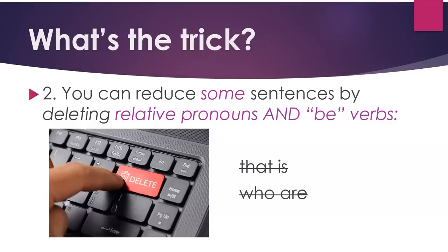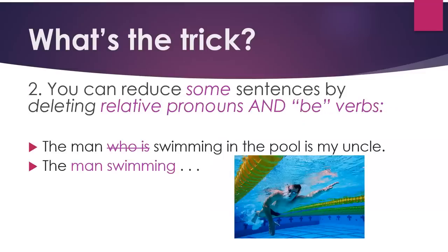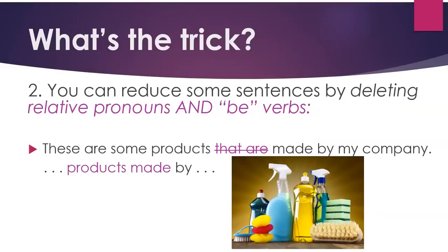You can also reduce some sentences by deleting relative pronouns and be verbs — for example, 'that is' and 'who are.' For example: 'The man who was swimming in the pool is my uncle.' We can delete 'who was.' The new sentence is: 'The man swimming in the pool is my uncle.' Here's another example: 'These are some products that are made by my company.' Delete 'that are': 'These are some products made by my company.'